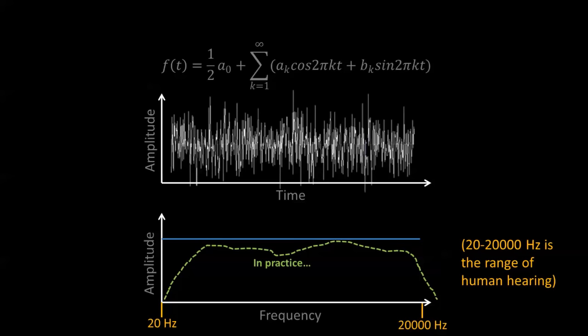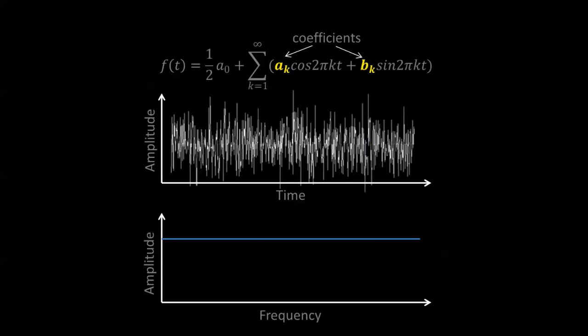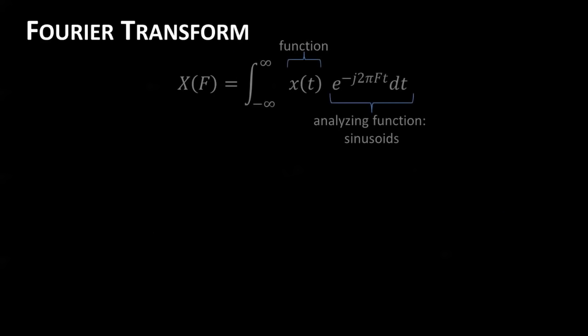So we have a periodic signal which we can decompose into sines and cosines of various frequencies. The next question is: how do we calculate those coefficients at each particular frequency? The answer is to use a Fourier transform. If you're familiar with calculating correlations, the Fourier transform is essentially the same thing — you're multiplying the signal by an analyzing function, which in our case are sinusoids. Wherever they are similar, they multiply and sum to a large coefficient; wherever dissimilar, to a small coefficient.